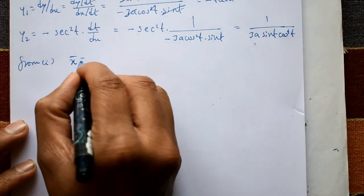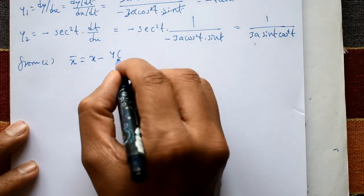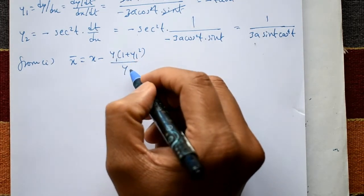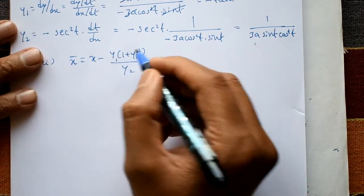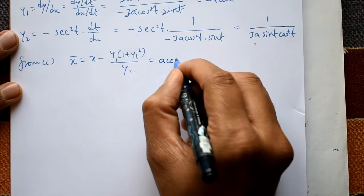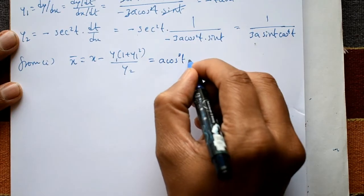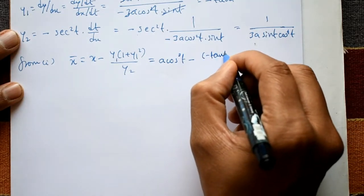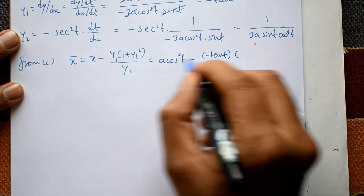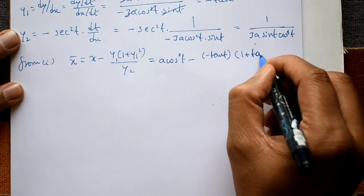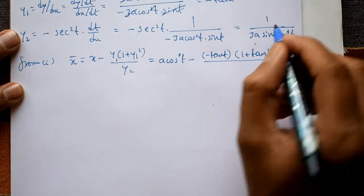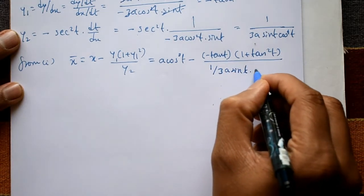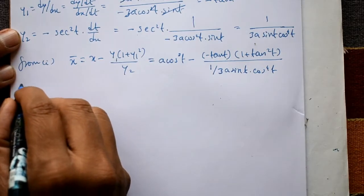From equation 1, x̄ = x - y1·(1 + y1²)/y2. Substituting: x = a·cos³(t), y1 = -tan(t), so the numerator term becomes (-tan(t))·(1 + tan²(t)), and y2 = 1/(3a·sin(t)·cos⁴(t)).